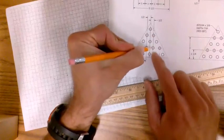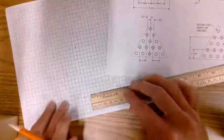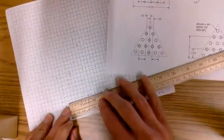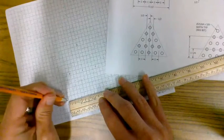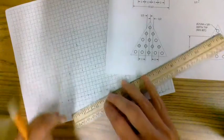Okay, so from this hole to this hole is one inch. So we're just going to mark it at one inch on both sides with a line, not a dot.